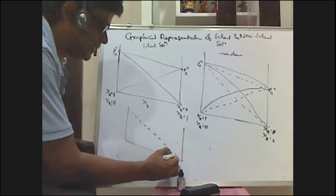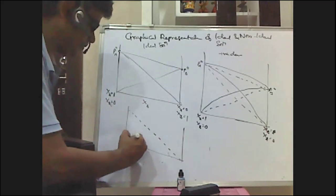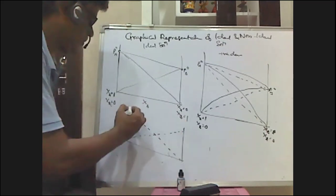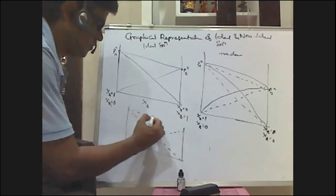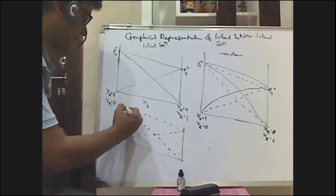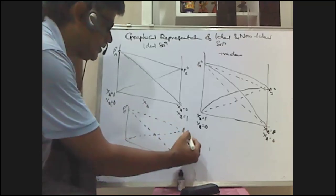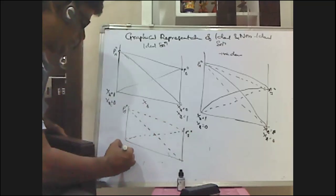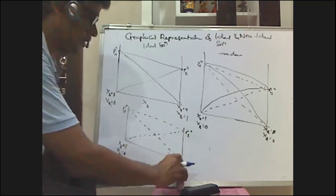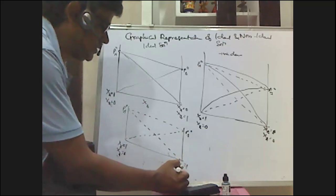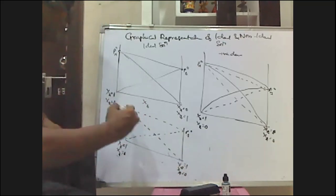The dotted line is the ideal line. PA⁰ is on one side and PB⁰ is on the other. When XA equals 1, XB equals 0; when XB equals 1, XA equals 0. For positive deviation, the curve lies above the dotted ideal line; for negative deviation, the curve lies below the dotted ideal line.